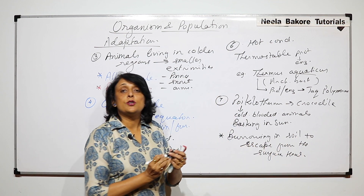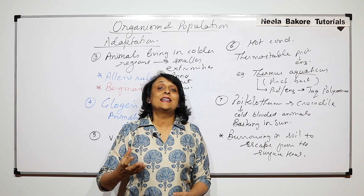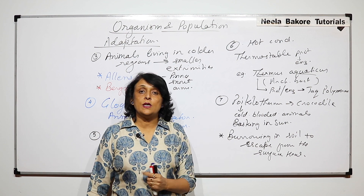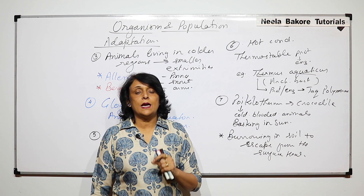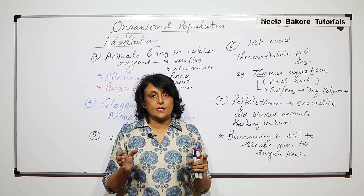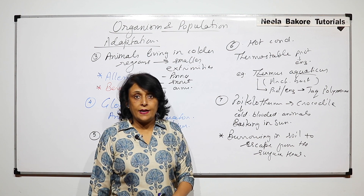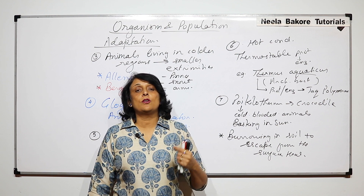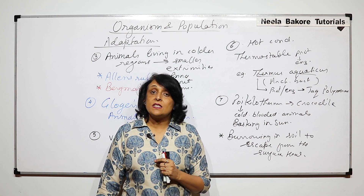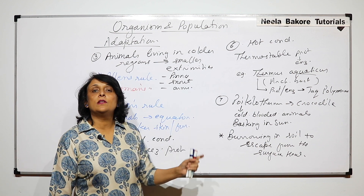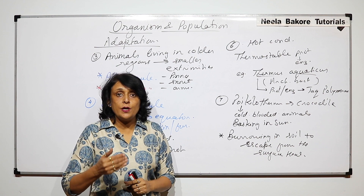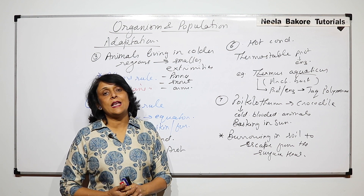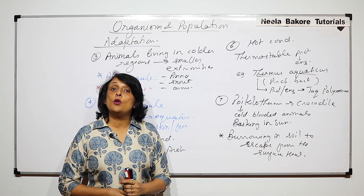There are also animals that have changed their activity time. We know about diurnal and nocturnal animals. When animals want to avoid extremely hot conditions, they become nocturnal or get active during dawn and dusk, when solar intensity and temperature are not that high. This changed activity is an adaptation helping them survive in adverse conditions. When we talk of responding to an abiotic condition, it is because of all these kinds of adaptations which these animals have achieved over a long period of time.